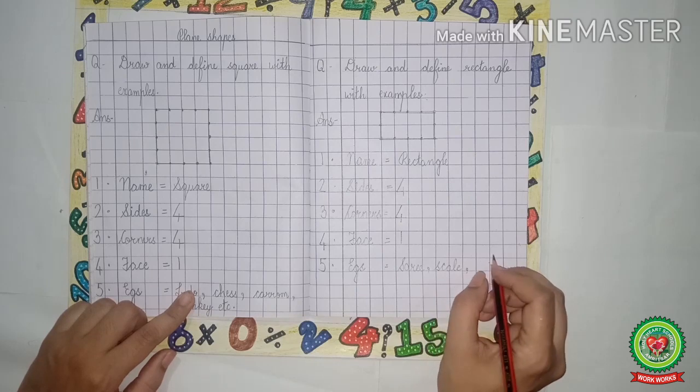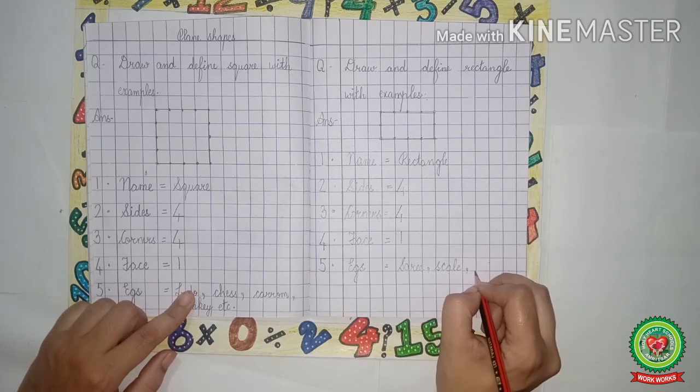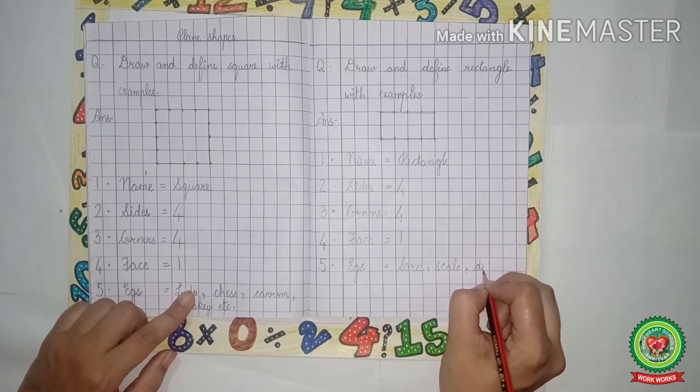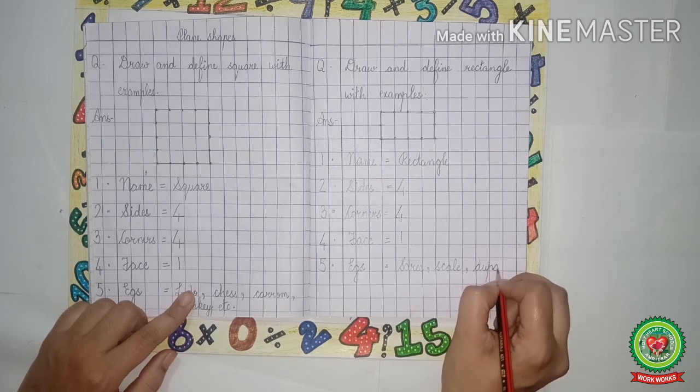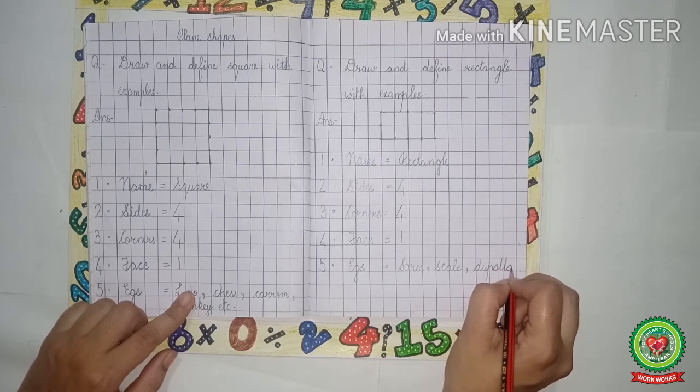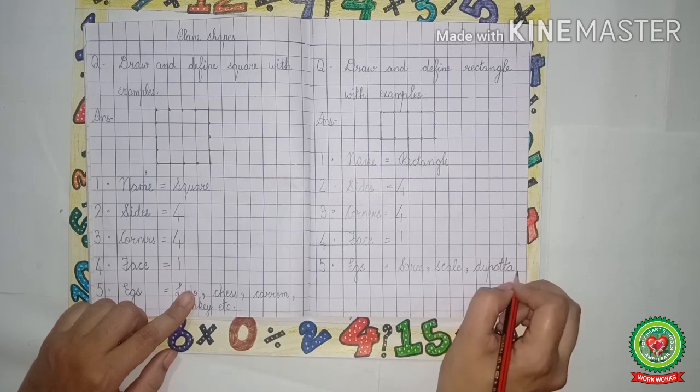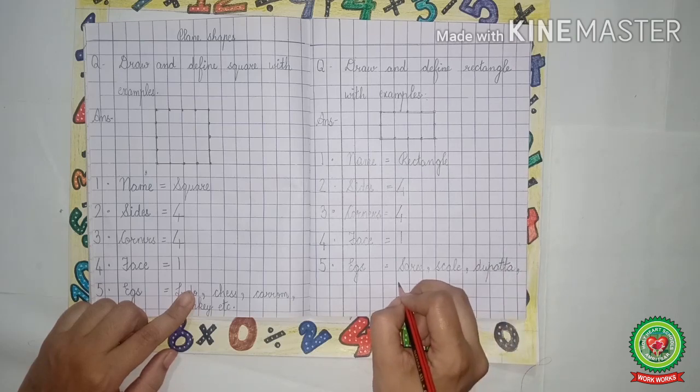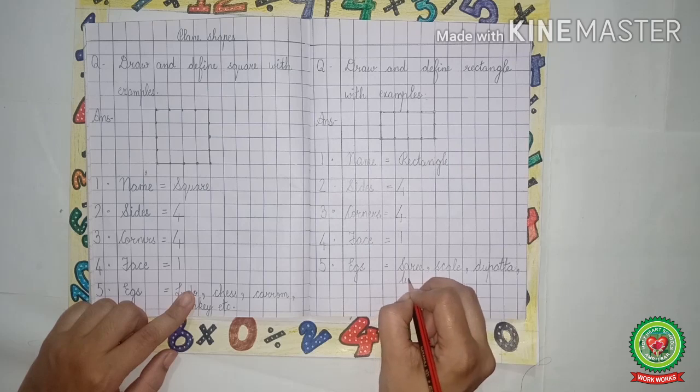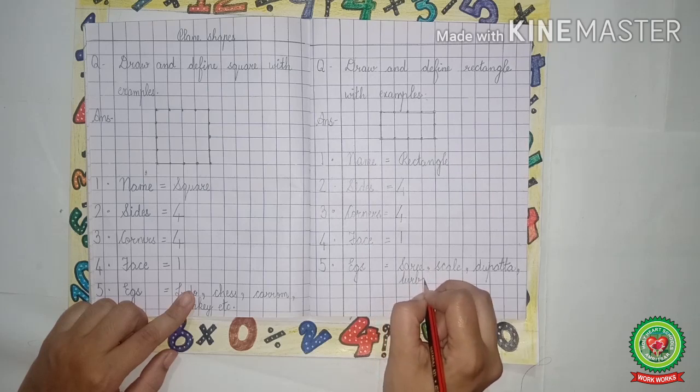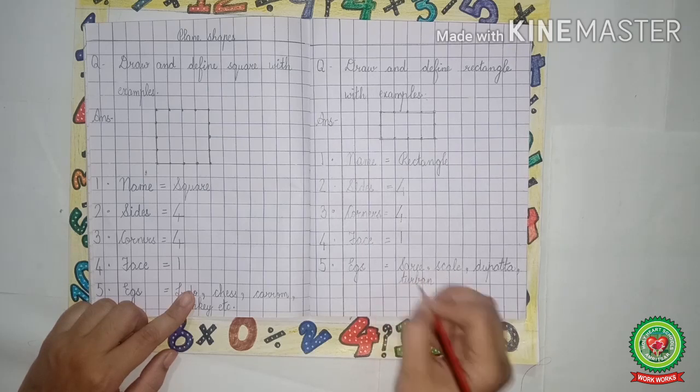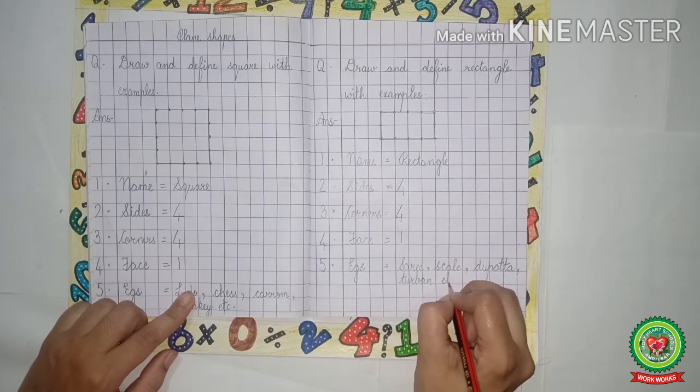Dupatta, D-U-P-A-T-T-A, dupatta. Comma. Turban, T-U-R-B-A-N, turban. And at the end, we will write E-T-C dot, etc.